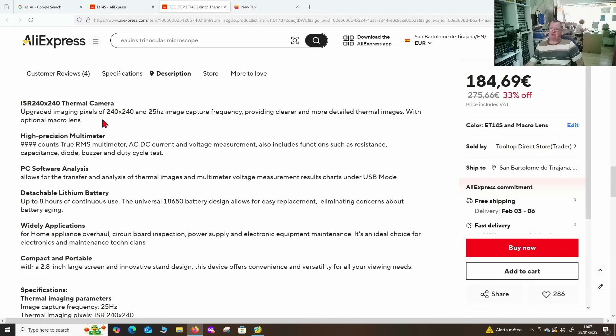It says we have upgraded imaging, 240 by 240 pixels, 25 hertz refresh. We had the same refresh rate before. The multimeter, as I noticed, has added current range now. It uses PC software analysis. So this means you can transfer images that you take with the thermal camera. You can transfer multimeter voltage measurement result chart under USB mode. Detachable lithium battery, up to eight hours. Universal battery. So you can change the battery easily on this if you ever need to.